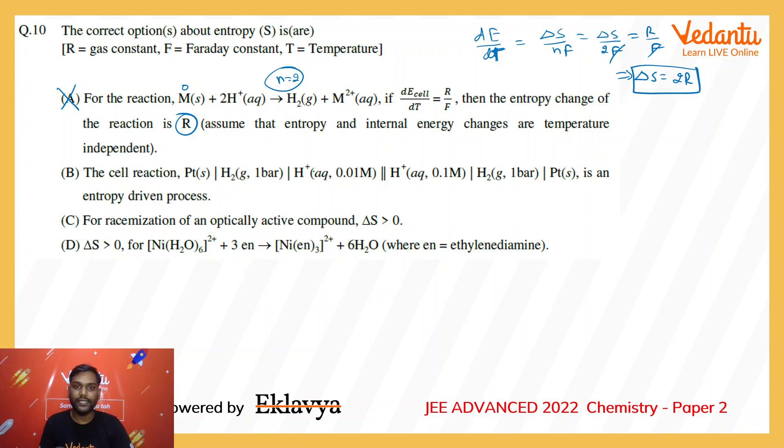Option B: The cell reaction Pt solid, H2 gas, H+ with 0.01M concentration cell is an entropy-driven process. The net reaction for this cell has the same reaction in both containers, so ΔH equals zero. Because it's spontaneous, ΔG must be negative. Since ΔG equals ΔH minus TΔS and ΔH is zero, for negative ΔG, ΔS must be positive. Therefore, the cell reaction is entropy-driven, so option B is absolutely correct.